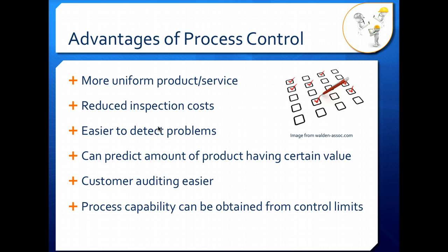So when we want to keep our process in control, well aside from producing a more uniform product, which is what consumers are expecting—they want to get the same product every single time they go to the store and purchase your product—you can also reduce your inspection cost because if you're monitoring your process on a regular basis, you may be able to take fewer samples.